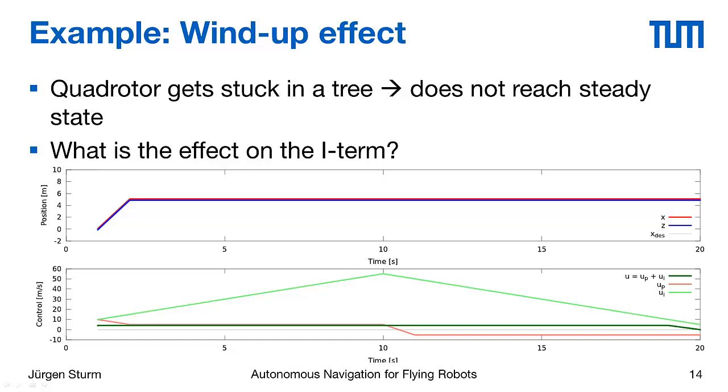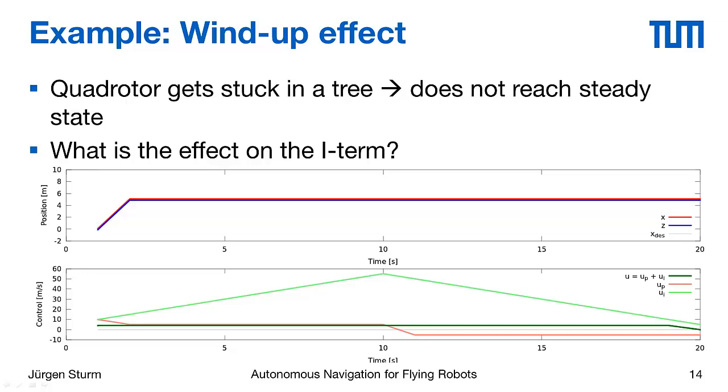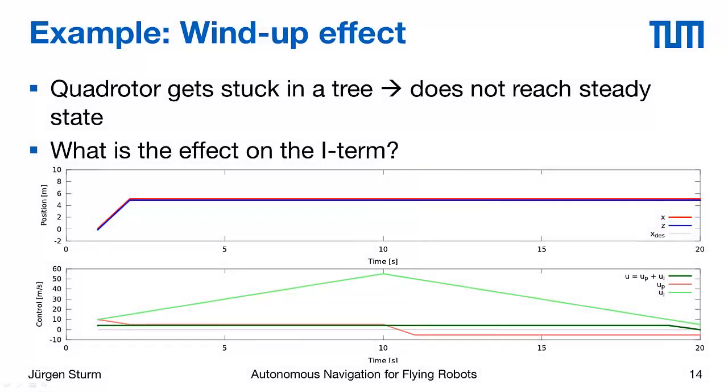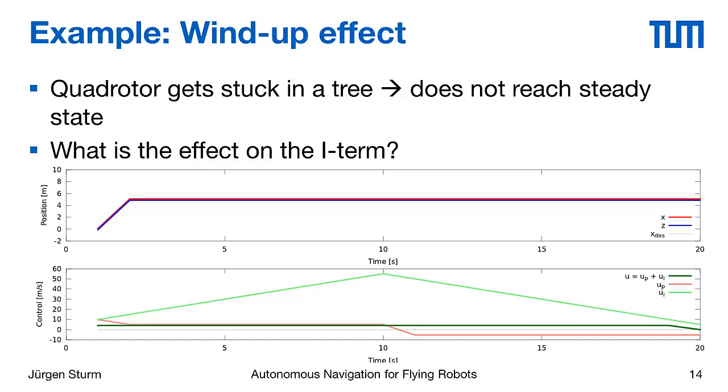If we send the quadrotor at time step 10 back to the origin it won't go, because this integral term still outweighs our proportional controller that tries to move the quadrotor back. This is why the integral term is sometimes a bit difficult and dangerous to be used.